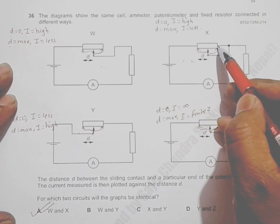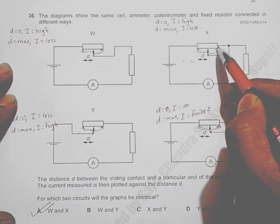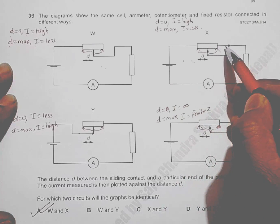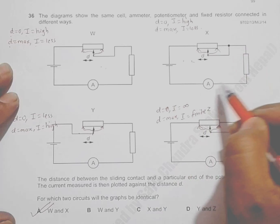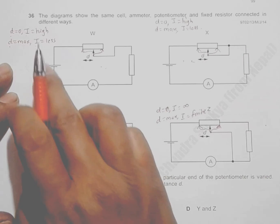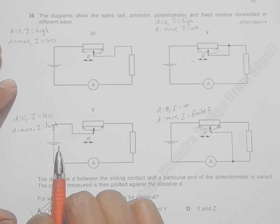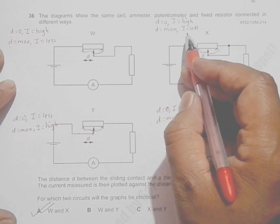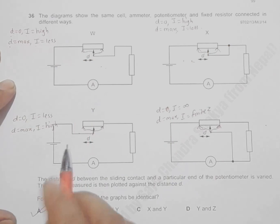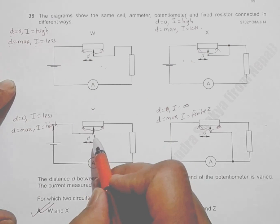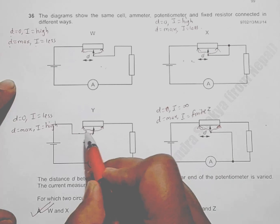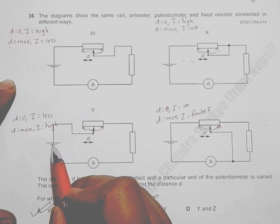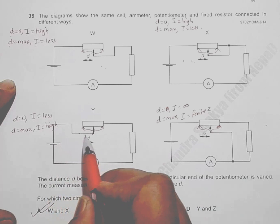When d equals maximum in the second diagram, current must flow through both resistors regardless of the path taken. So the current is less — exactly like diagram one. Therefore d=max gives low current, similar to the first case. Moving to diagram three, things are now reversed.